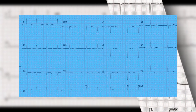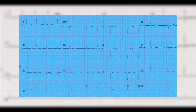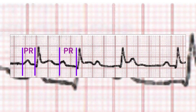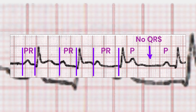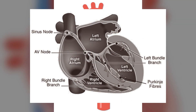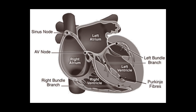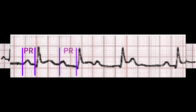Mobitz type 1, also known as Wenckebach, is a type of 2nd degree atrioventricular AV block characterized by a gradual lengthening of the PR interval on an electrocardiogram until a beat is dropped. During normal cardiac conduction, electrical impulses travel from the sinoatrial node to the atrioventricular node and then to the ventricles. In Mobitz type 1, the electrical impulses are delayed or blocked at the diseased AV node, resulting in a progressively longer PR interval on the ECG. Eventually, the electrical impulse is blocked entirely, leading to a dropped beat. The cycle is then repeated.